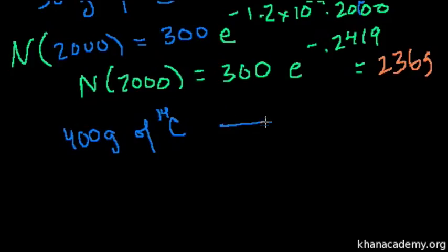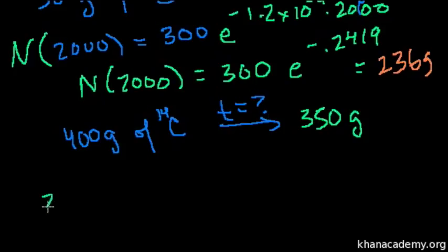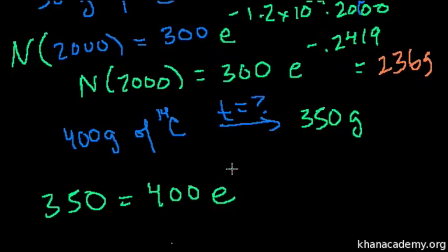And I want to know how long, so I want to know a certain amount of time. Does it take for me to get to 350 grams of C-14? So you just say that 350 grams is how much I'm ending up with. It's equal to the amount that I started off with, 400 grams, times e to the minus k. That's minus 1.2 times 10 to the minus 4 times time. And now we solve for time.